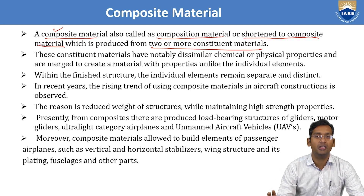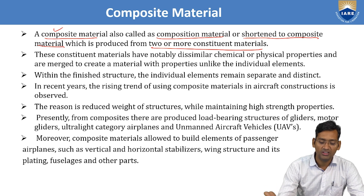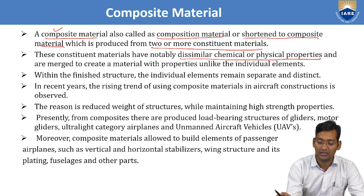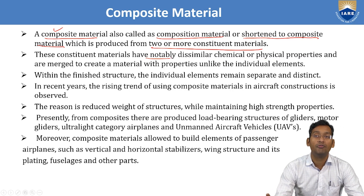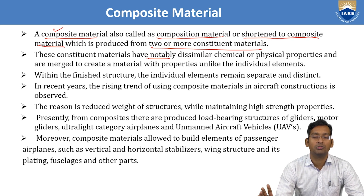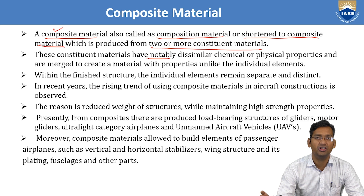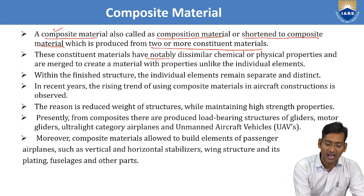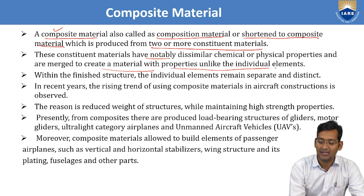Minimum two constituent materials are required; more than two can be used depending upon the requirement. These constituent materials have notably dissimilar chemical or physical properties. They must have different physical and chemical properties so that, after merging, the resulting material has properties unlike those of the individual elements.